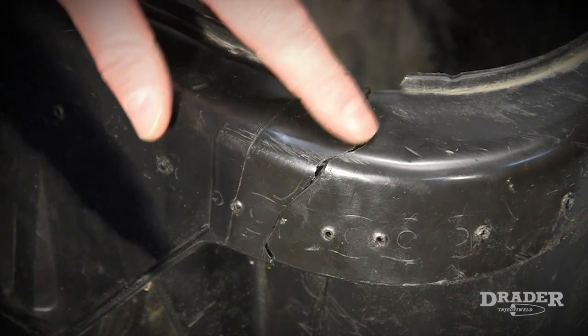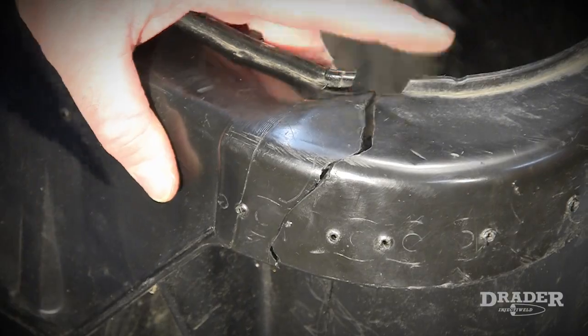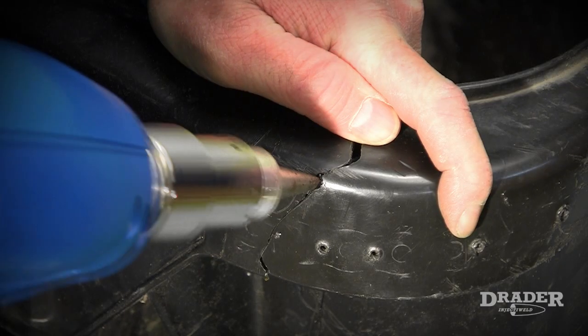Now I will use the Draytor Injecta Weld to repair the top of the garbage can. I will start by making a few spot welds to hold the crack together.